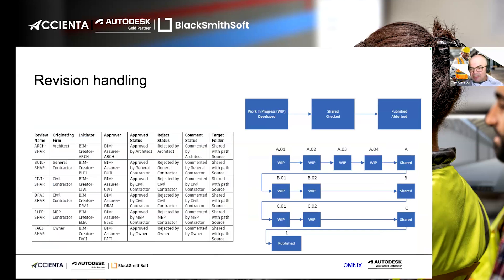For revision handling, work starts in WIP with mini-versions such as A01, A02, A03, A04. Once ready for approval, it goes through a workflow and becomes Revision A. If not accepted, it goes back to WIP. The next version becomes Revision B, with its own sub-versions. Once all revisions are approved and ready for construction, the numbering can change to 1, 2, etc. All these requirements can be handled within the ACC system.